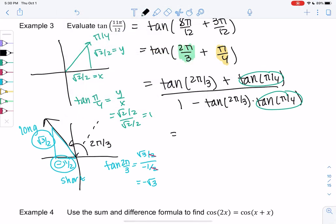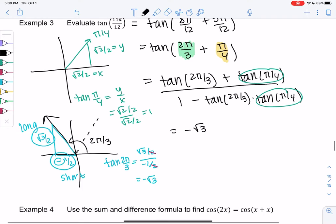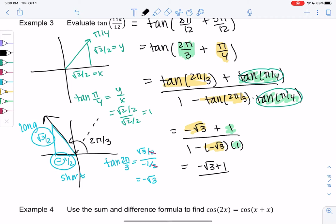And so let's start plugging in. So tangent of 2π over 3 is negative root 3 plus 1, all over 1 minus negative root 3 times 1. So I'm plugging in the negative root 3 for tangent of 2π over 3 and 1 for the tangent of π over 4. And it looks like this simplifies to negative root 3 plus 1 all over 1 plus root 3. I'd probably just rewrite it as 1 minus root 3 over 1 plus root 3. It's fine as is. It's an ugly answer.